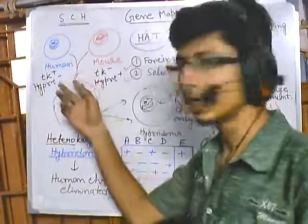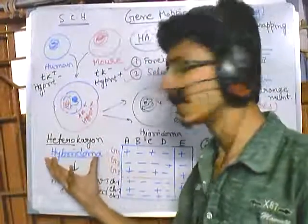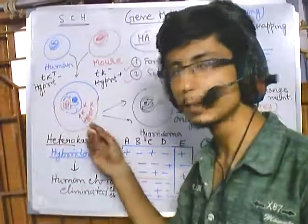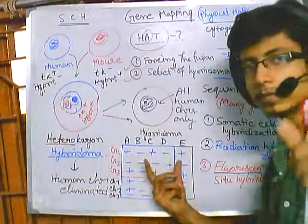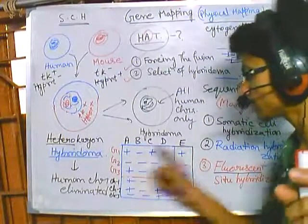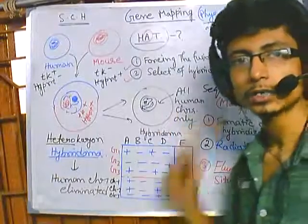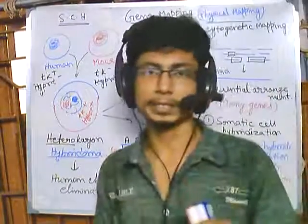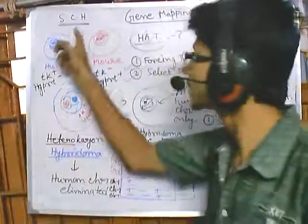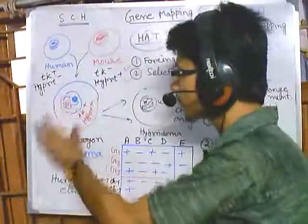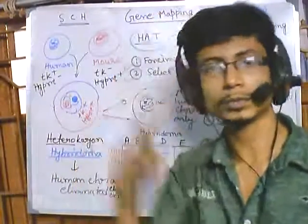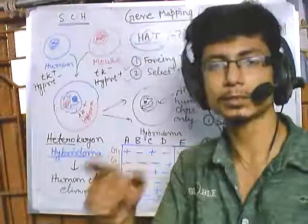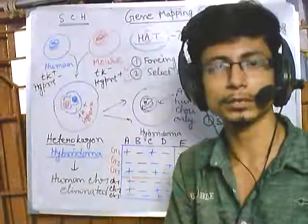This kind of hybridization will again produce hybridoma cells, which we then select. The resulting methodology for predicting the presence of genes is exactly the same as I discussed for somatic cell hybridization. But the only difference is that in somatic cell hybridization, after the production of hybridomas, they soon start to lose those human chromosomes.